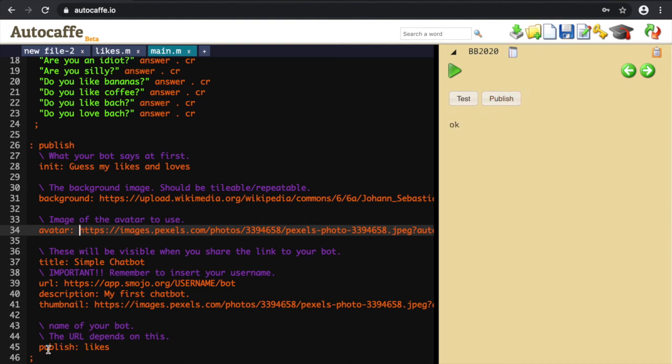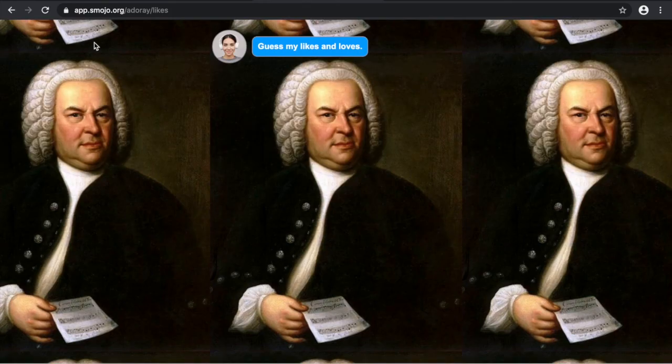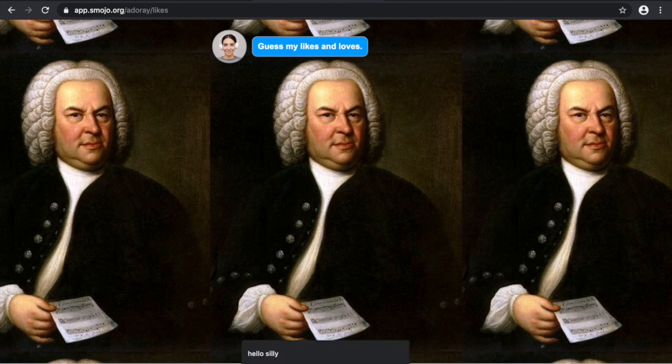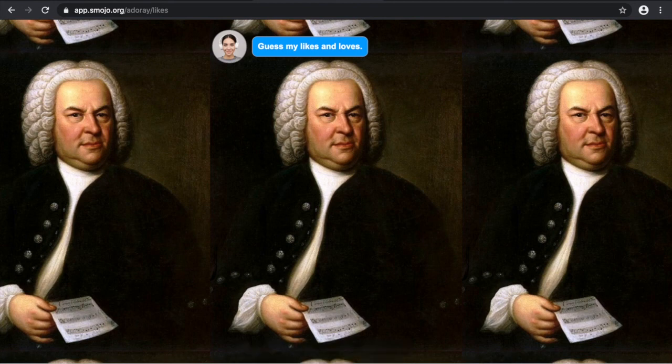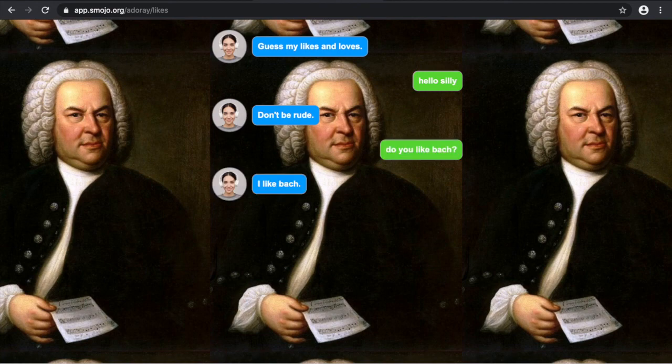That's great. So now you know that your bot now is no longer called bot. It's called likes. So we have to change the URL. So let's click on app.smojo.adory. And it's likes. So it's not hard to guess that this bot likes Bach. Now, because this chat bot is a combination of the bad language bot and the likes bot, it will still handle bad language like, hello, silly. It'll say, don't be rude. And do you like Bach? And yes, it says, I like Bach. Okay. That's it.